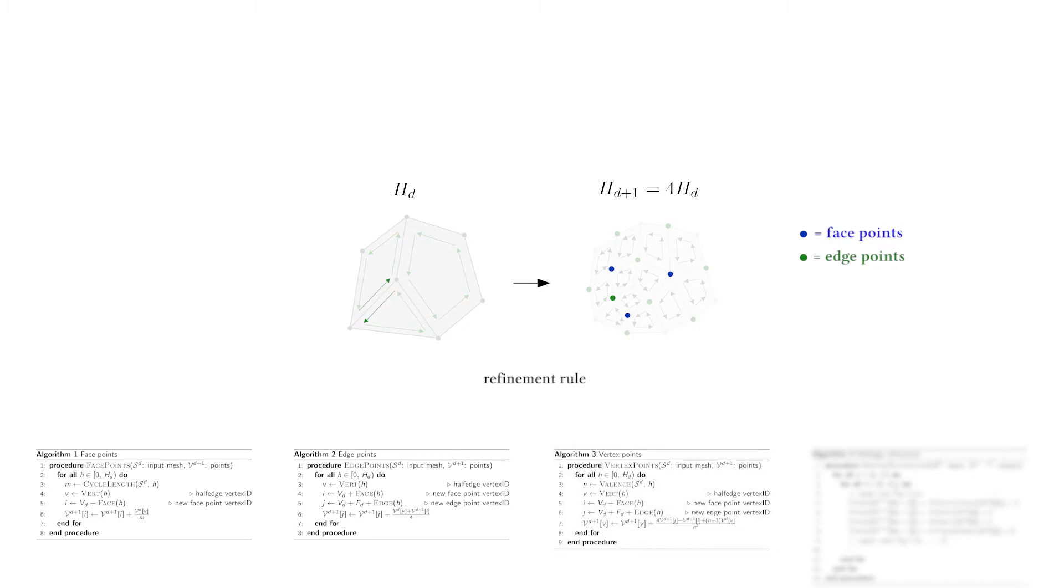Third, we compute each new vertex point using the half edges that depart from the original vertex. For instance, this red vertex originates from these red half edges.